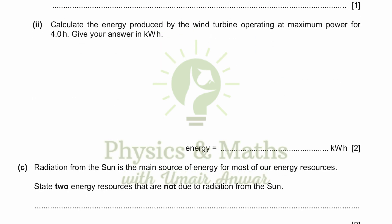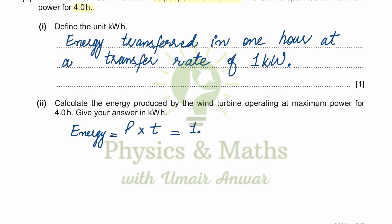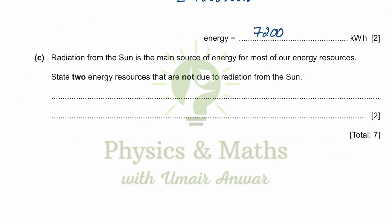Calculate the energy produced by the wind turbine operating at maximum power for four hours; give your answer in kilowatt-hours. Energy is equal to power multiplied by time. Power given is 1.8 megawatts, which is 1.8 × 10⁶ watts. Converting to kilowatts by dividing by 1000 gives 1800 kilowatts, multiplied by 4.0 hours. The answer is 7200 kilowatt-hours.